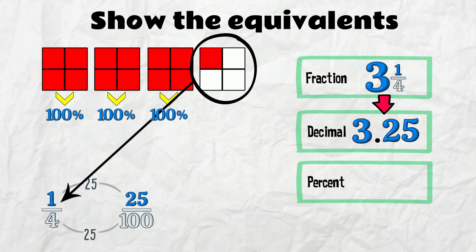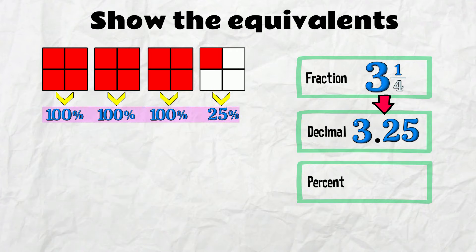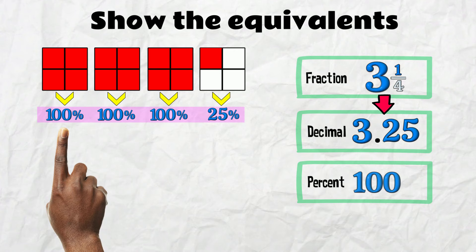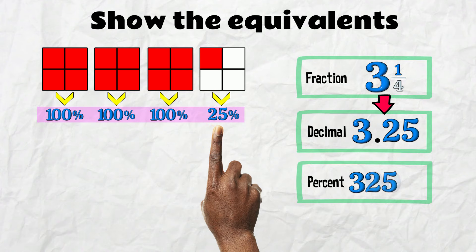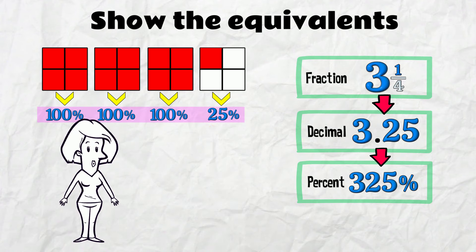And here, we've got 1 quarter, which we know is 25 over 100, or 25%. If we count these up, you'll see that we have 100, 200, 300, and 25%. Get this!